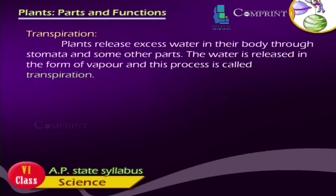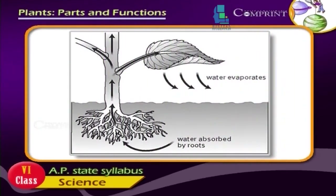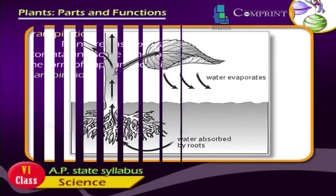Transpiration. Plants release excess water in their body through stomata and some other parts. The water is released in the form of vapor and this process is called transpiration.